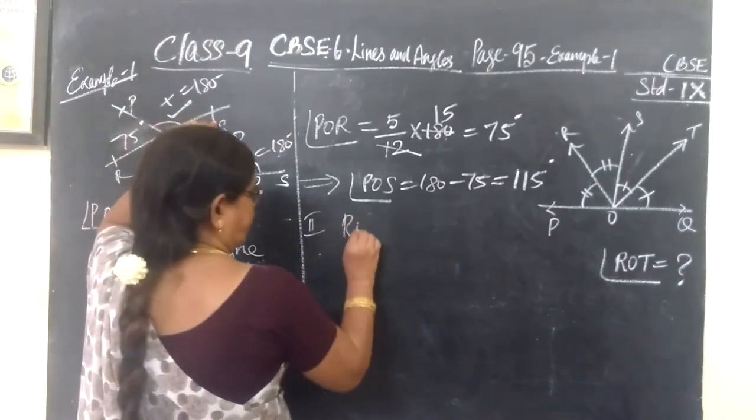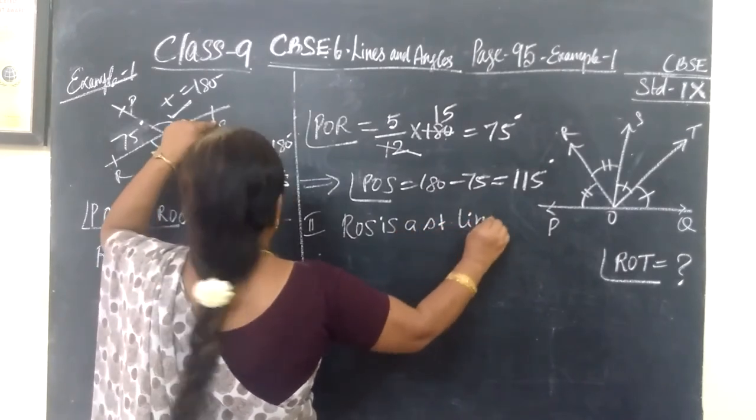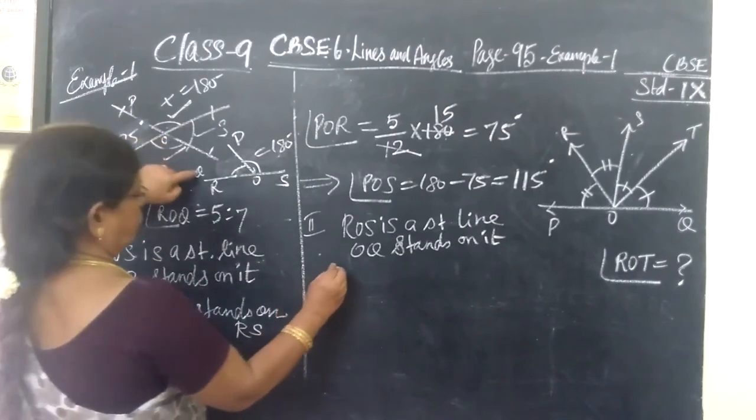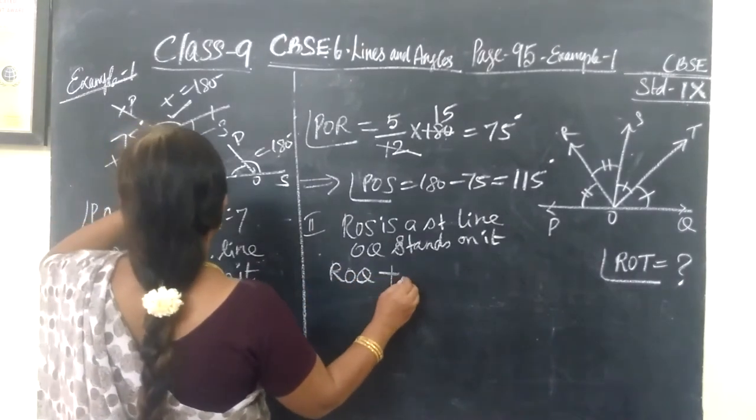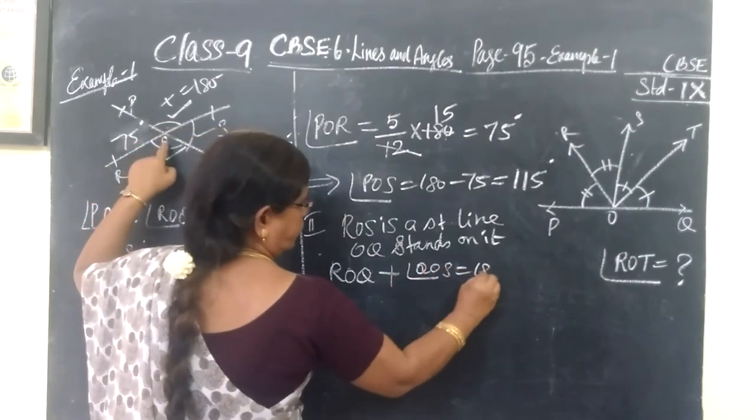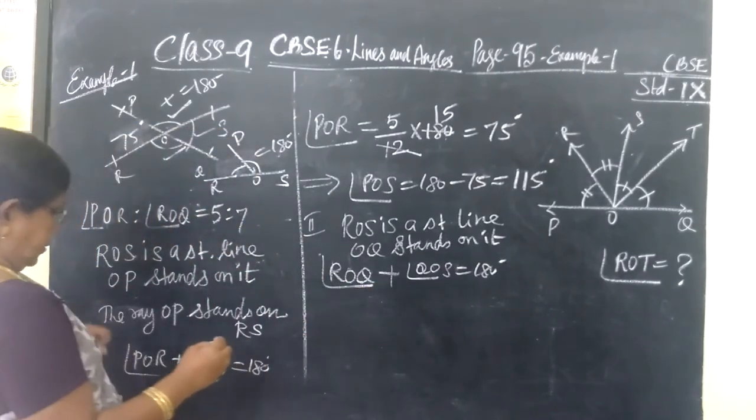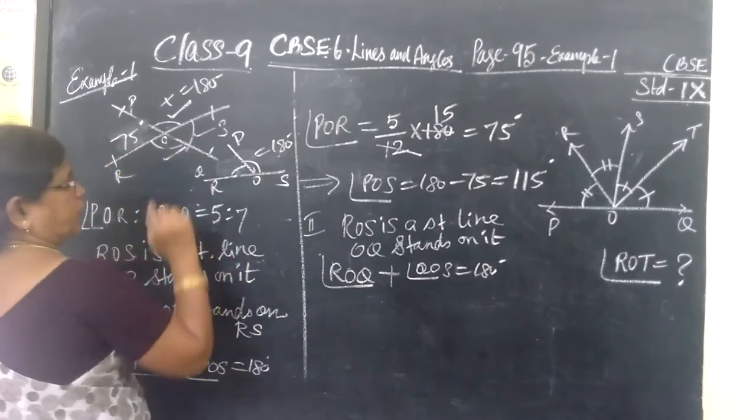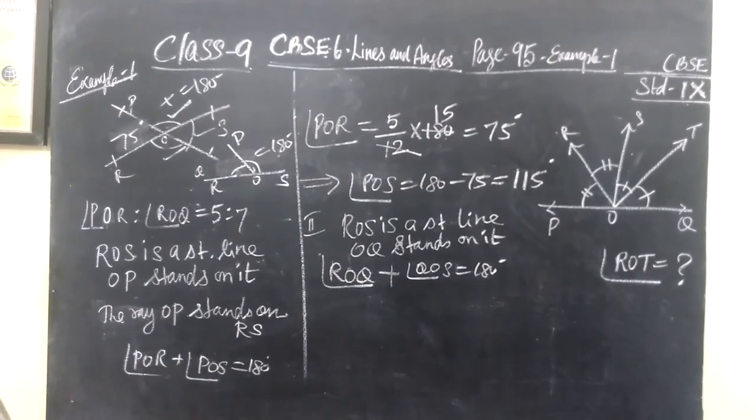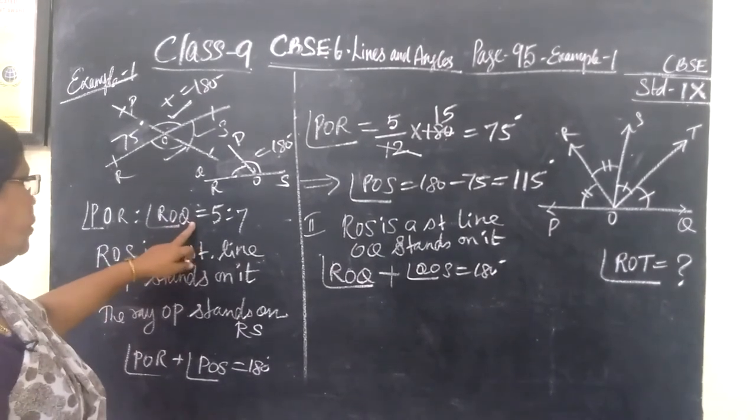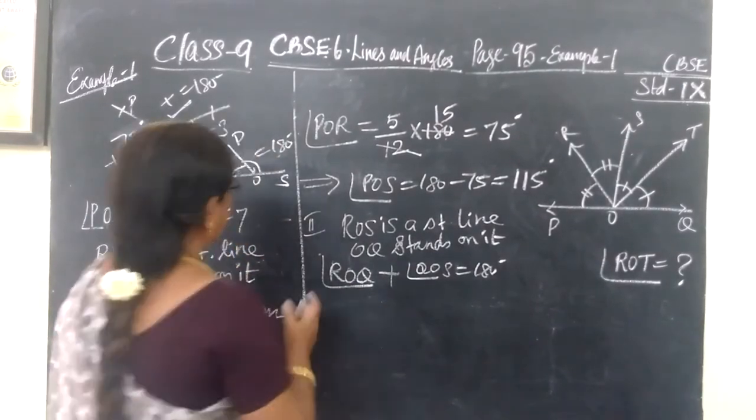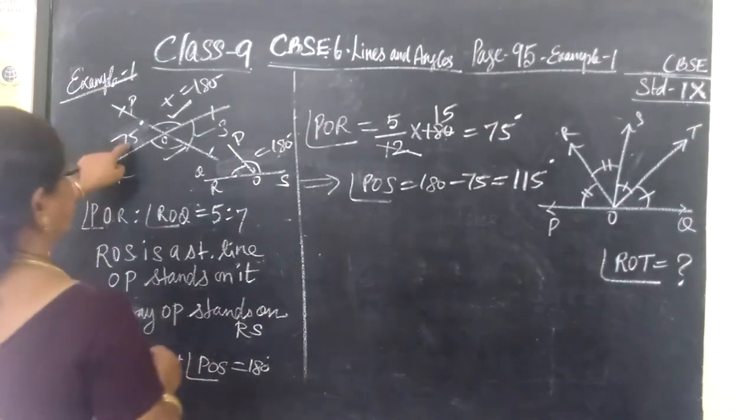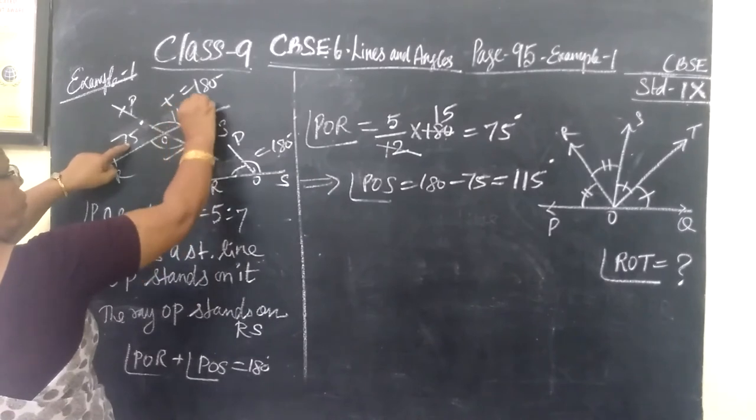The same step. Here ROS is a straight line and the ray OQ stands on it. So that you already have ROQ plus QOS equals 180 degrees. Or you can use the property vertically opposite angles. That is easier. We use the property vertically opposite angles are equal. Because this is 75 and this also we found it as 115 degrees.